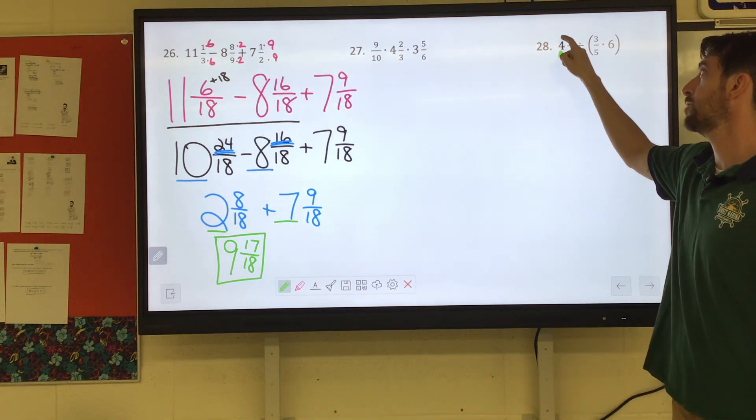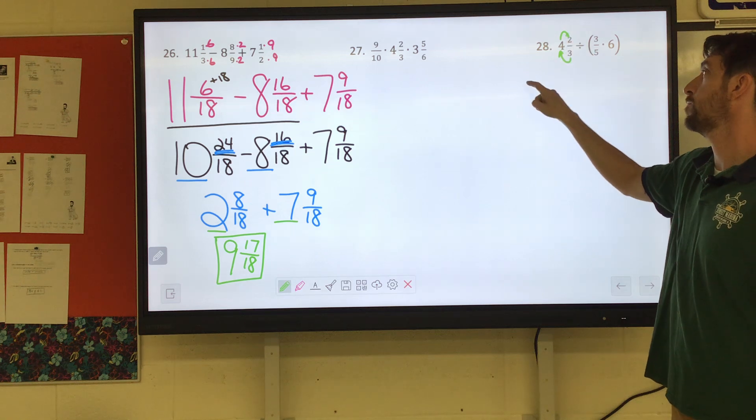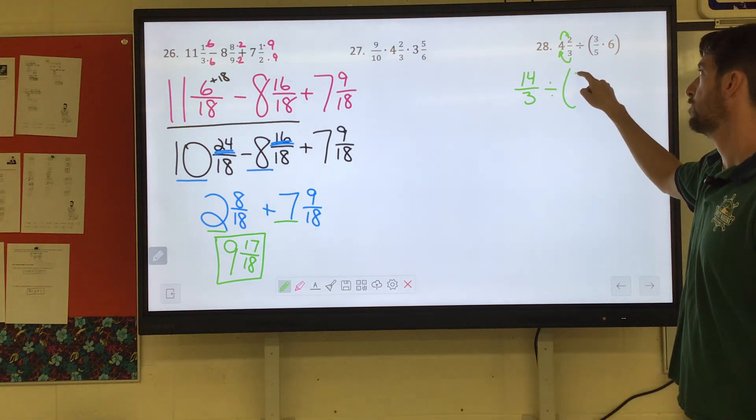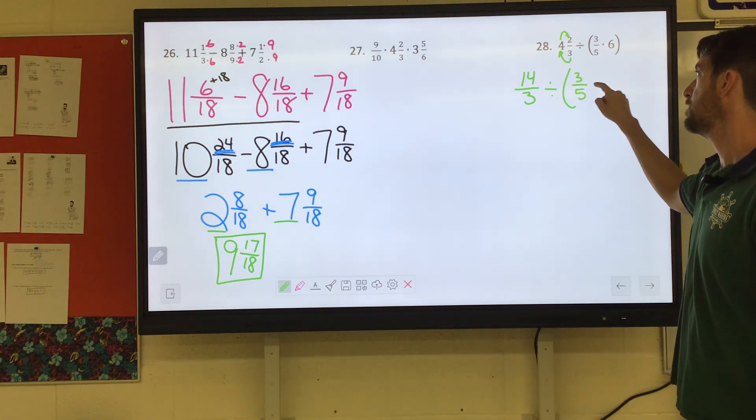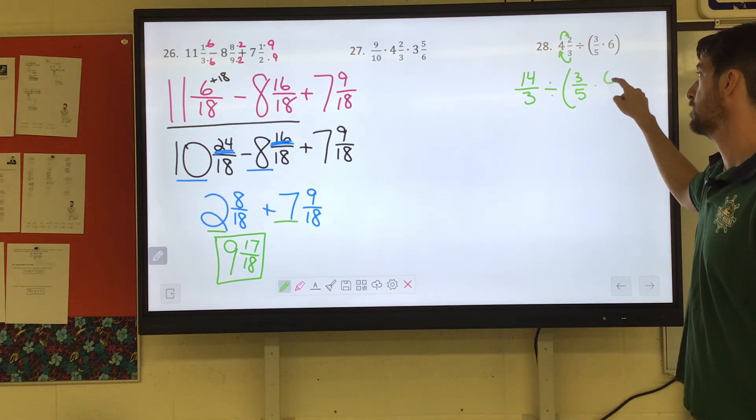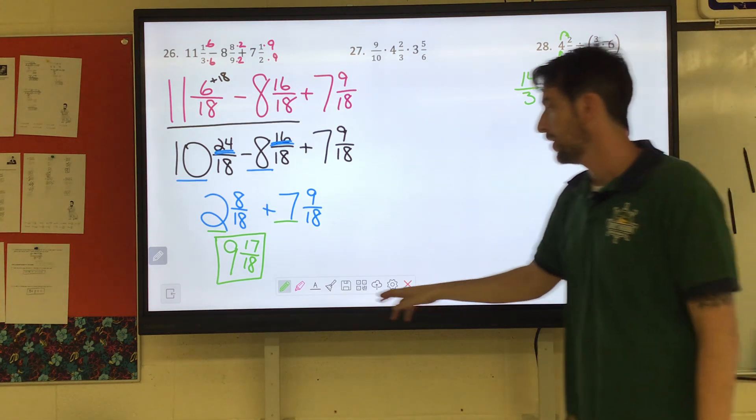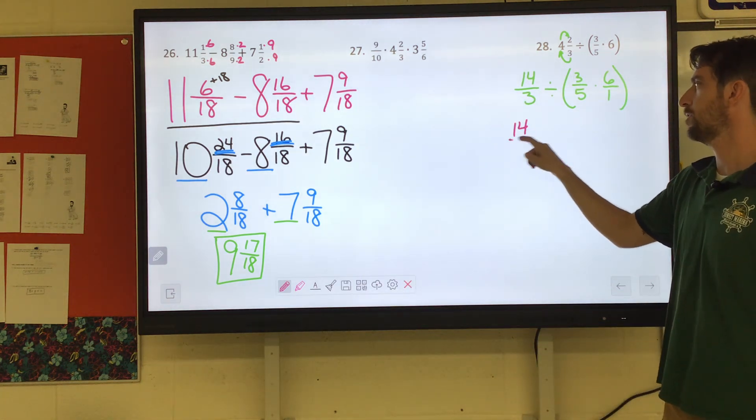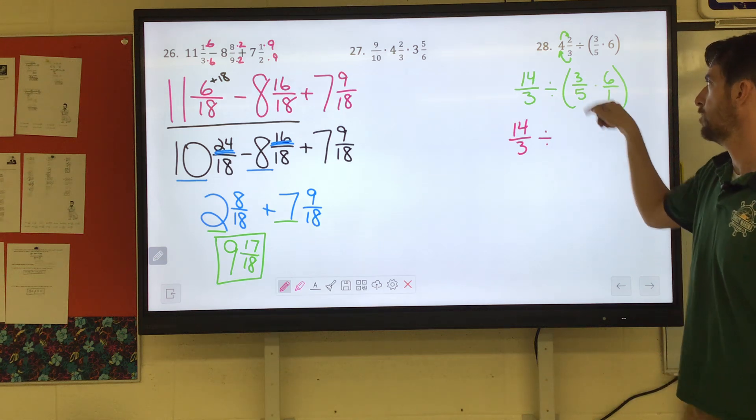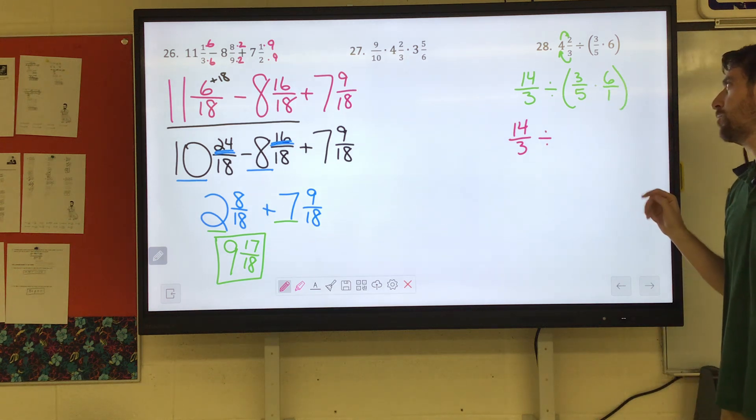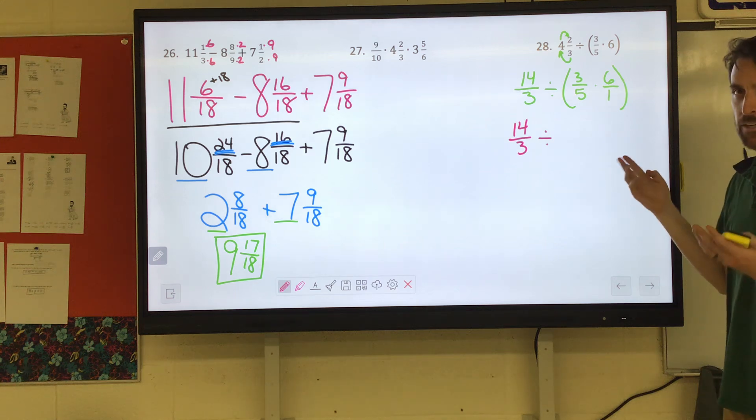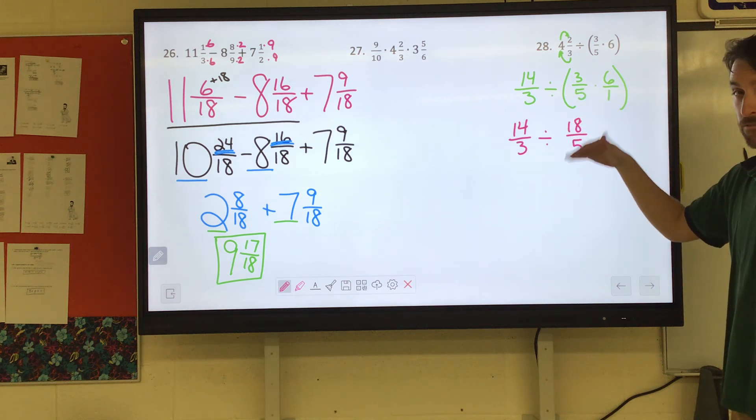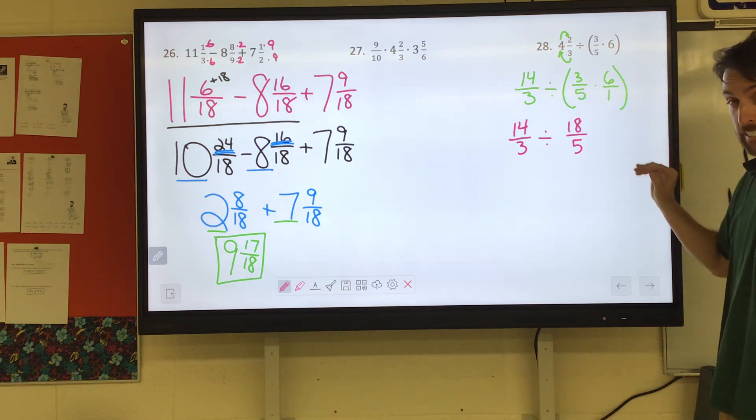So 4 and 2 thirds. We're going to do 3 times 4 is 12 plus 2 would be 14. So we have 14 thirds divided by, and then in parentheses here we have 3 fifths times 6. 6, if it was a fraction, would be 6 over 1. Okay? Your order of operations would say that you do the parentheses first. So 14 thirds divided by, and 3 fifths times 6 over 1. Nothing will simplify, so we could go ahead and multiply. 3 times 6 is 18. 5 times 1 is 5. 14 over 3 divided by 18 over 5.